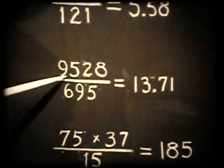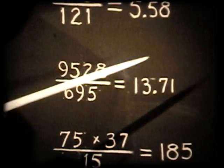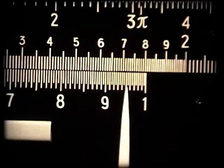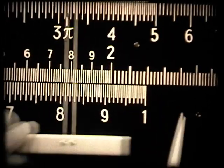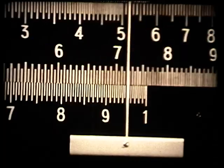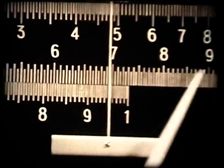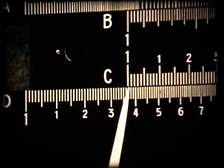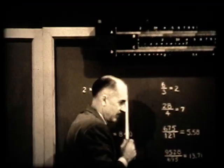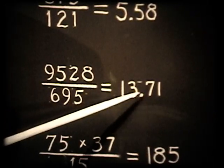Here is a process using a larger number: 9,528 divided by 695 equals 13.71. We go to the far right-hand side and pick up 9,528, place the slider over that position, and divide by 695 by bringing 695 on the C scale over it. The index is off, so we have to go way over to the left and find the answer as 137 — we can't get the fourth significant figure because the slide rule is only good to three. The examination of the figure shows the decimal point is here, giving 13.7.